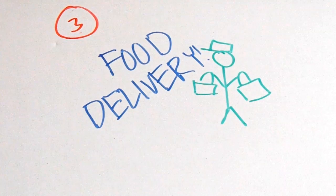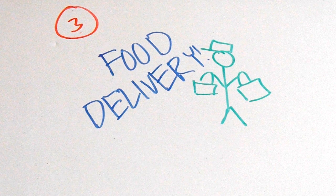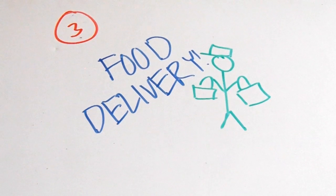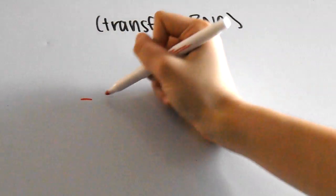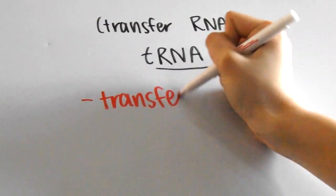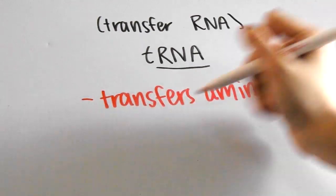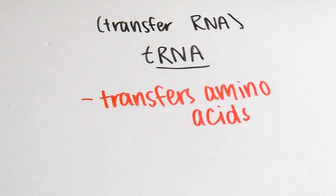After this, we said that calling up the supermarket was next so that the delivery man would bring the ingredients. Now the delivery guy is representing yet another type of RNA called tRNA or transfer RNA. The tRNA transfers amino acids, which are the building blocks of proteins, to the protein builders of the cell called ribosomes.